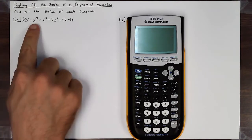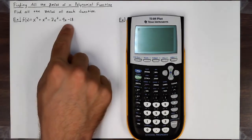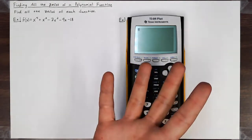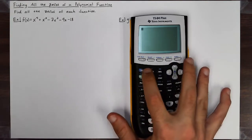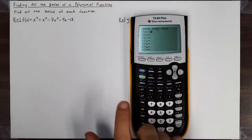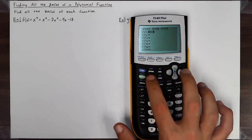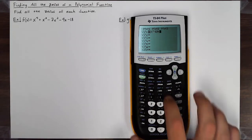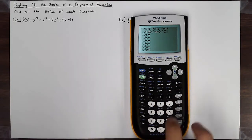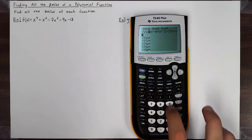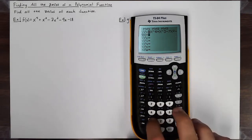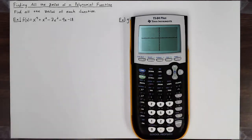I want to find the zeros, so I'll start by graphing this to see where my real zeros might be. I'm going to hit y-equals and plug in x to the fourth plus x to the third minus 7x squared minus 9x minus 18. Now I'll hit graph, and this is the graph I get from this polynomial.